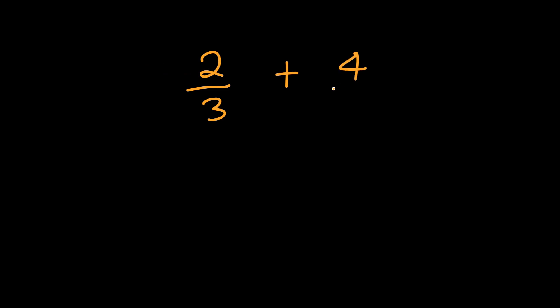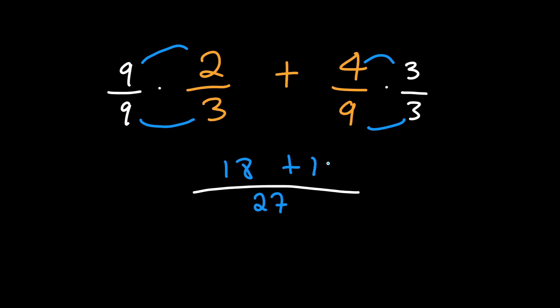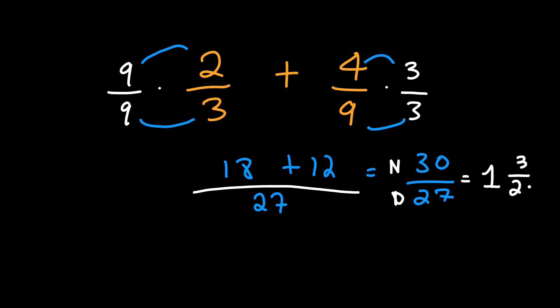Alright, here's another example: two over three plus four over nine. Let's multiply by nine on one side and by three on the other. Nine times three is twenty-seven, and three times nine is twenty-seven. Nine times two is eighteen, and four times three is twelve. Eighteen plus twelve gives us thirty over twenty-seven. The denominator is smaller than the numerator, so we simplify: twenty-seven goes into thirty one time with a remainder of three over twenty-seven.